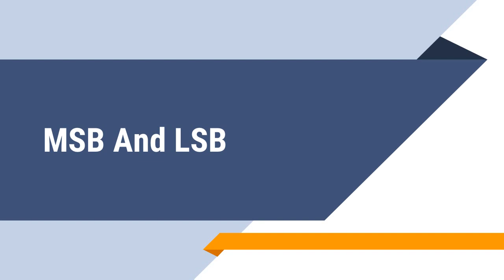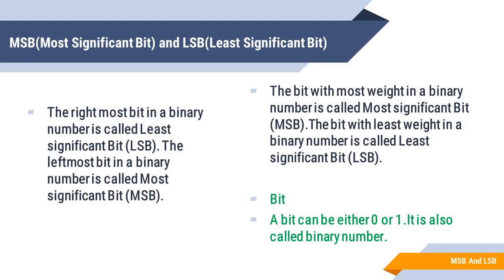The bit with the highest power in a binary number is called MSB, and the bit with the lowest power is called LSB. The rightmost bit in a binary number is called LSB, and the leftmost bit in a binary number is called MSB.